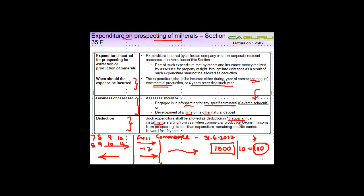Starting from the year when commercial production begins. So the first deduction you will get is in financial year 11-12. If income from prospecting is less than the expenditure, so let's say during financial year 11-12 your income is 80 rupees.